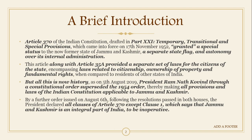Part 21 of the Constitution is entitled 'Temporary, Transitional and Special Provisions.' As is clear from the name, the articles in this part are temporary, transitional, and special provisions for different states of India. Article 370 came into force on 17 November 1952 because it granted a special status to the now former state of Jammu and Kashmir. A separate state flag was given, and autonomy was given to Jammu and Kashmir over its internal administration.